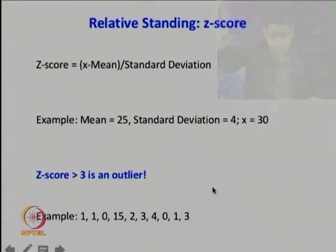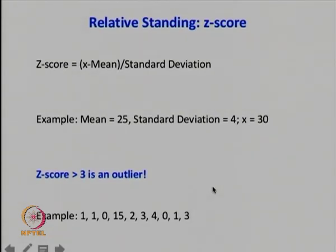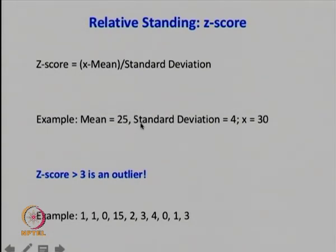This brings us to the concept of z-score, or relative standing. The z-score is defined as (x minus mean) divided by standard deviation. For example, if your mean is 25, standard deviation is 4, and x is 30, the z-score is (30 minus 25) divided by 4, which equals 1.25.